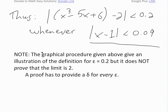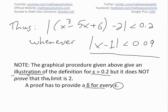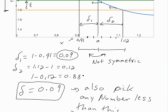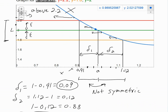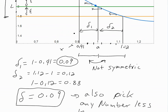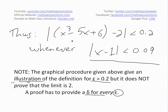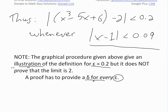One important final note: the graphical procedure given above is basically an illustration of the definition for epsilon equals 0.2, but it does not prove that the limit is 2. A proof must provide a valid delta for every epsilon, regardless of how small — as long as it's greater than 0. In the next video, I'll show how to prove that the limit exists using an algebraic approach with actual numbers rather than just graphically or subjectively stating it.